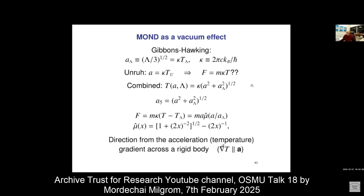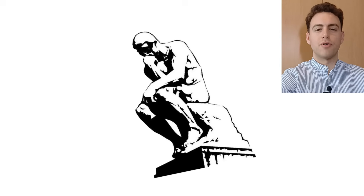In MOND you need to define your acceleration as an absolute acceleration, so where is the frame that will provide this? I thought maybe it's the vacuum — the quantum vacuum. And I have a problem with this, which I want to point out in this video.